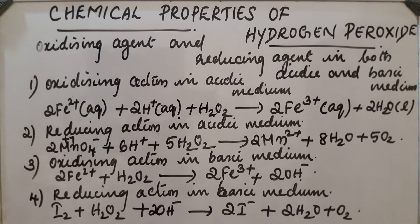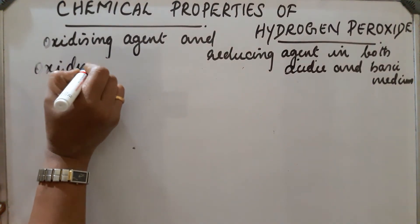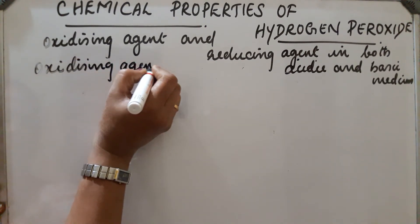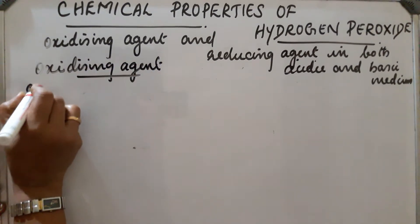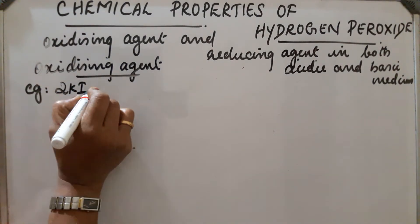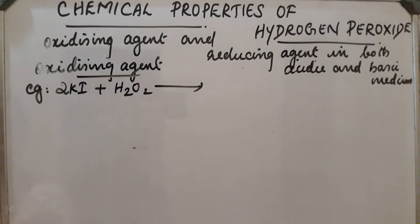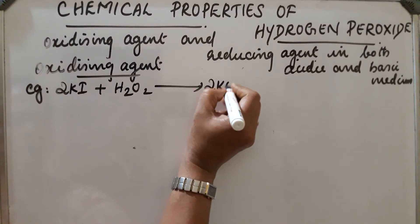From all these cases we can see that hydrogen peroxide acts both as an oxidizing agent and a reducing agent in both acidic and basic media. Now a few more examples: reactions in which H₂O₂ acts as an oxidizing agent — example: 2 KI plus H₂O₂ gives 2 KOH plus I₂.